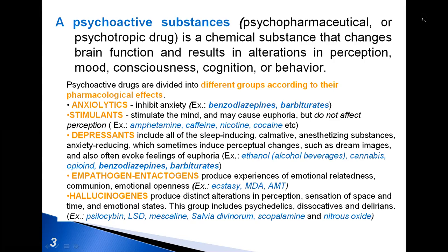Emphatogens and toctogens produce experiences of emotional relatedness, communion, and emotional openness. Hallucinogens produce distinct alterations in perception, sensation of space and time, and emotional states. This group includes psychedelics, dissociatives, and deliriants.